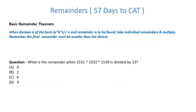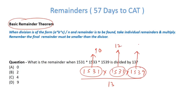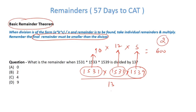Let's begin with basic remainder theorem. Consider 1531 × 1533 × 1539 divided by 13. What basic remainder theorem says is that when you have numerators multiplied together, you should take individual remainders. 1531 ÷ 13 gives remainder 10, 1533 gives remainder 12, and 1539 gives remainder 5. Now multiply the remainders: 10 × 12 × 5 = 600. The final remainder must be smaller than the divisor, so divide 600 by 13 — remainder is 2.